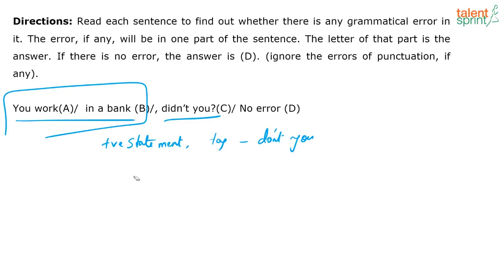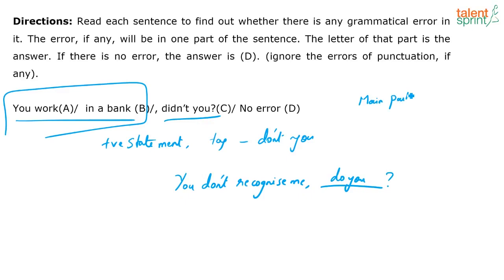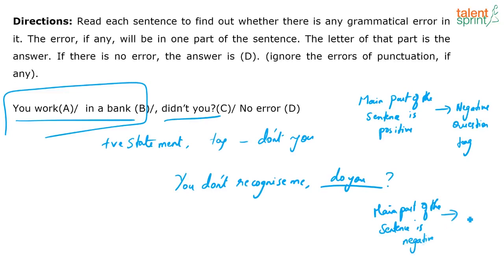To summarize the cornerstone rule: main part positive → negative question tag; main part negative → positive question tag. Next: 'They've gone away for a few days, haven't them?' Have you identified the error? It should be 'haven't they.' Another rule: whatever the subject is, the same pronoun only has to repeat in the tag as well. So it will be 'haven't they' and not 'haven't them.' The error is in part D.